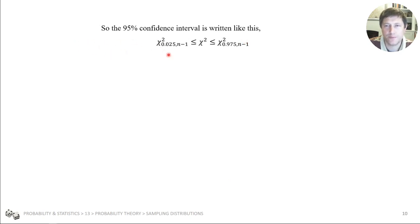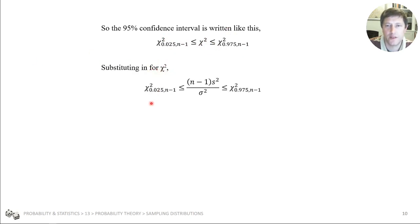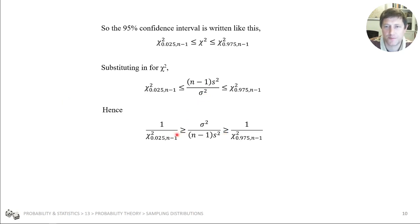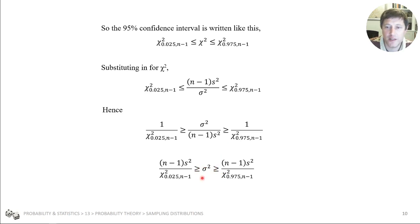We can write this down. Our 95% confidence interval for chi-squared looks like this — we're 95% confident it's between two values. We substitute in our definition of chi-squared. Then we rearrange by inverting, which reverses the inequality signs, and then multiplying through by (n-1)s-squared. We've got what we want: an inequality that tells us the population variance in terms of things we know — we know n, we know the non-biased variance of our sample, and we can find the confidence interval values from the chi-squared distribution table.